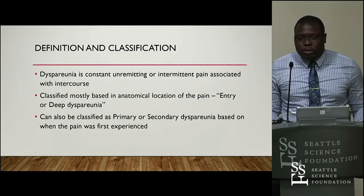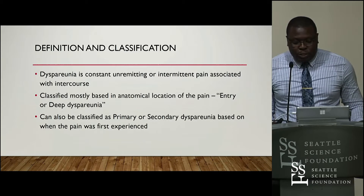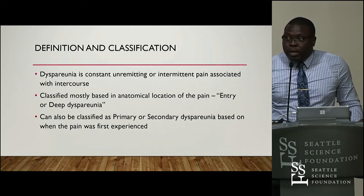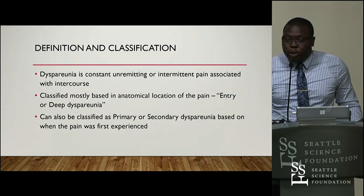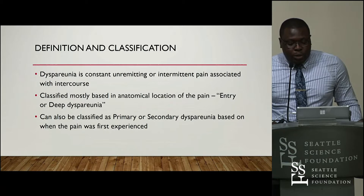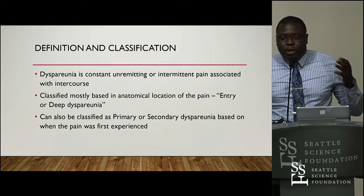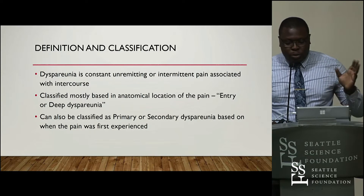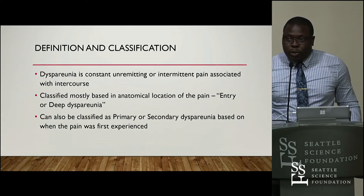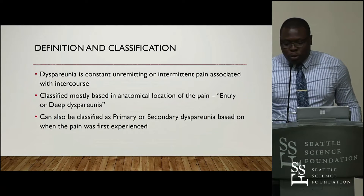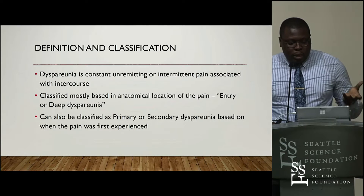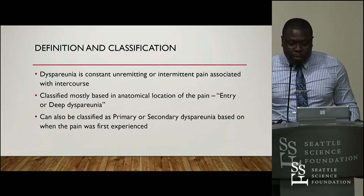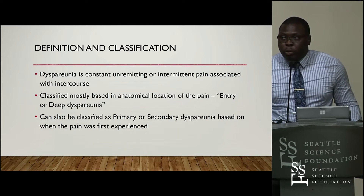Dyspareunia is basically defined as constant pain with intercourse, and it can be classified based on anatomical location: entry or deep. Entry dyspareunia is pain at the entrance into the vaginal introitus or around the vulva, whereas deep dyspareunia is pain all the way deep into the vaginal wall towards the cervix. We also have another classification: primary and secondary.